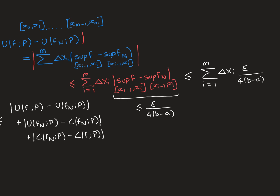By the end of the previous video, I had just finished proving that the difference between the supremum of the limit function and the supremum of the function f_n over any one of the subintervals of the partition — the modulus of that difference — is always going to be less than or equal to ε over 4(b − a). This inequality holds true no matter which subinterval you're talking about. What we can now do is combine all of those inequalities together to conclude that the overall sum is less than or equal to this: the sum of each one of the lengths of the subintervals times this modulus, which we know is less than or equal to ε over 4(b − a).